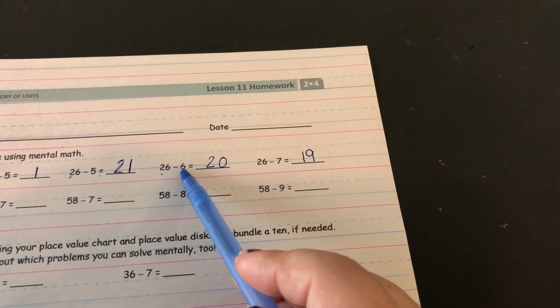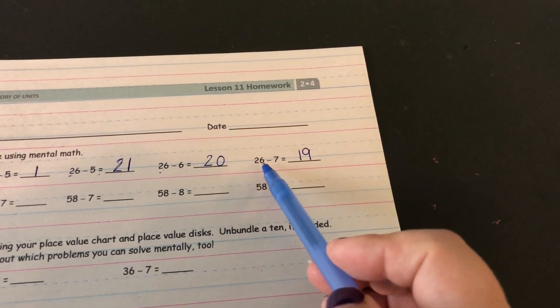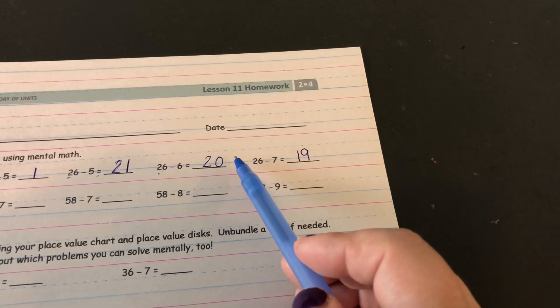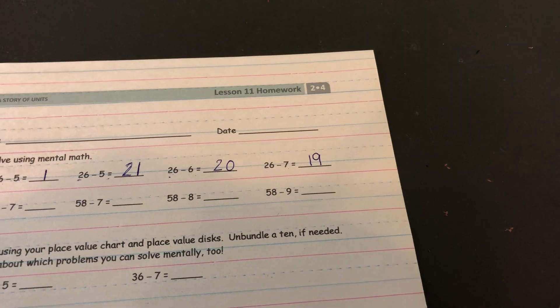Because if 26 take away the 6 is 20, 26 take away the 7 would be first take away the 6 and then take away one more to get 19.